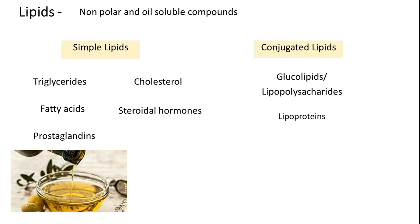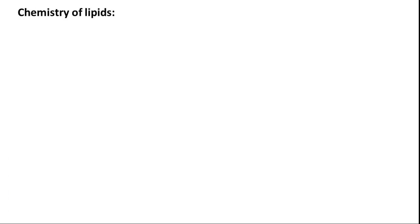Lipoproteins are a very important part of lipid biochemistry. They help in the transportation of lipids from place to place. The three categories of lipoproteins in our general circulation are VLDL, LDL, and HDL. They help in the transportation of lipids from place to place.